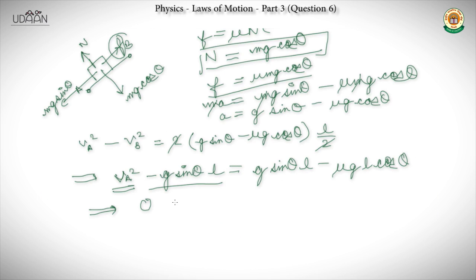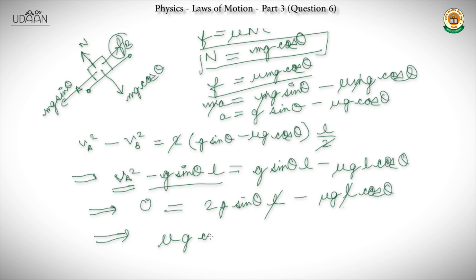We can cancel L and g from both sides. So we have μ·g·cos θ = 2g·sin θ, and cancelling g gives μ = 2·tan θ, which matches one of the given options.